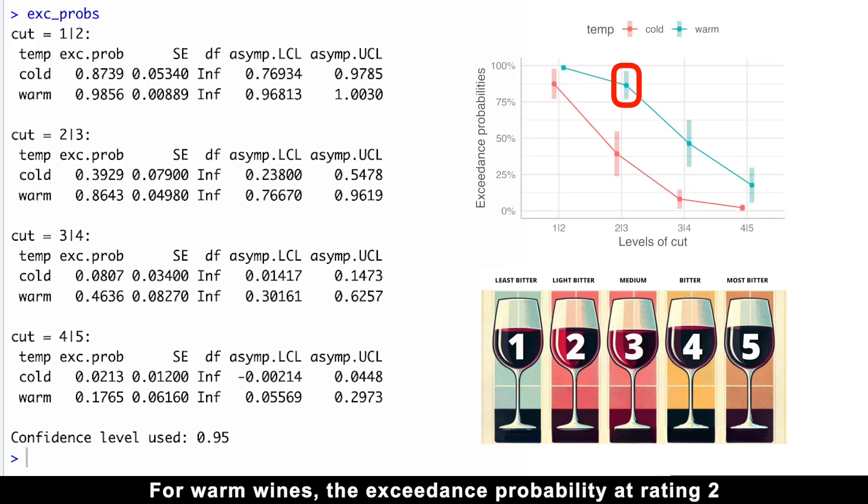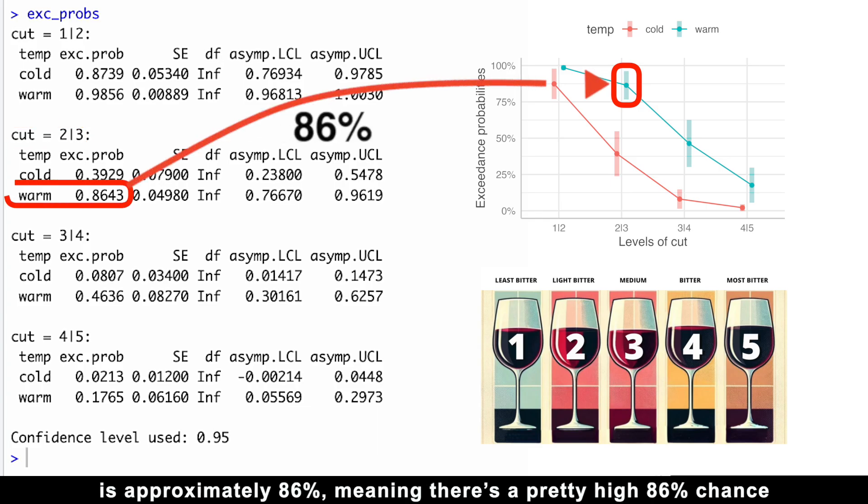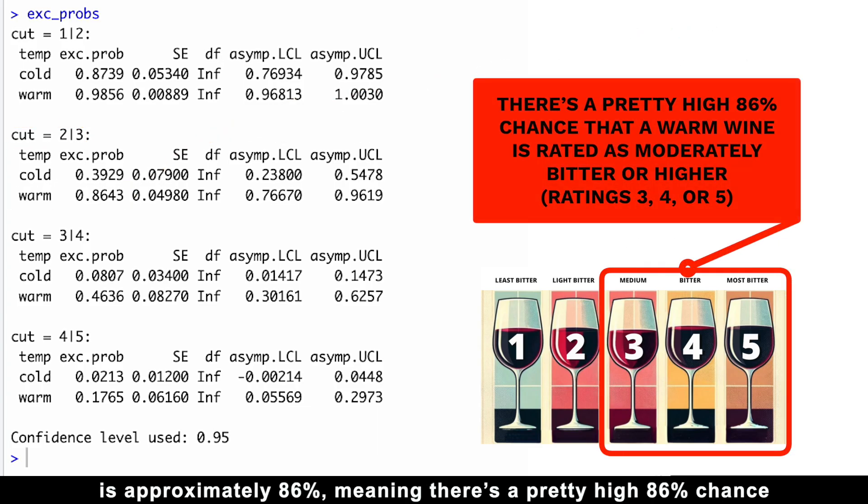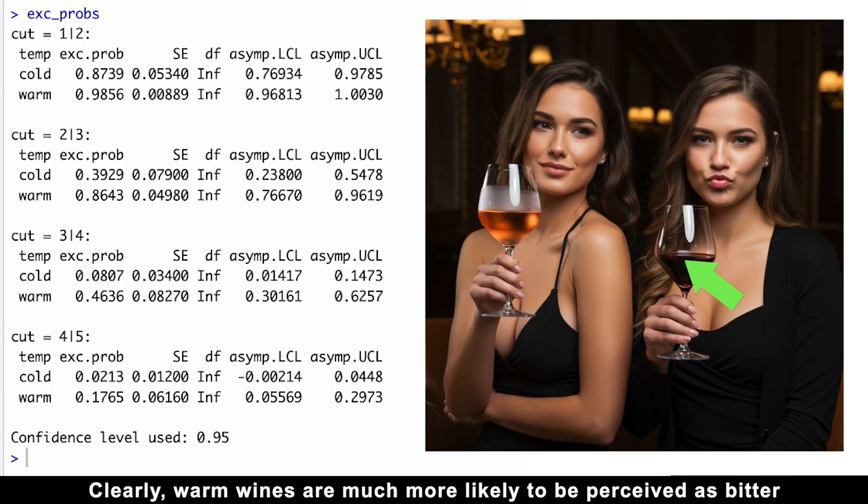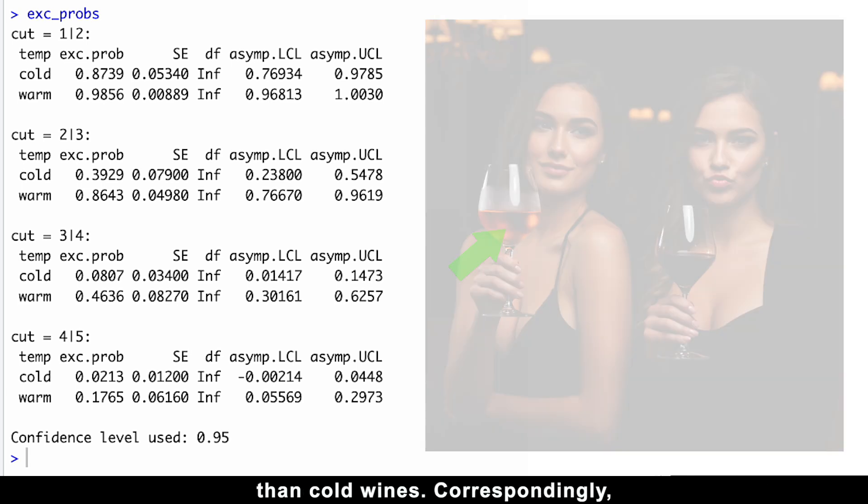For warm wines, the exceedance probability at rating 2 is approximately 86%, meaning there is a pretty high 86% chance that a warm wine is rated as moderately bitter or higher, namely, ratings 3, 4 or 5. Clearly, warm wines are much more likely to be perceived as bitter than cold wines.